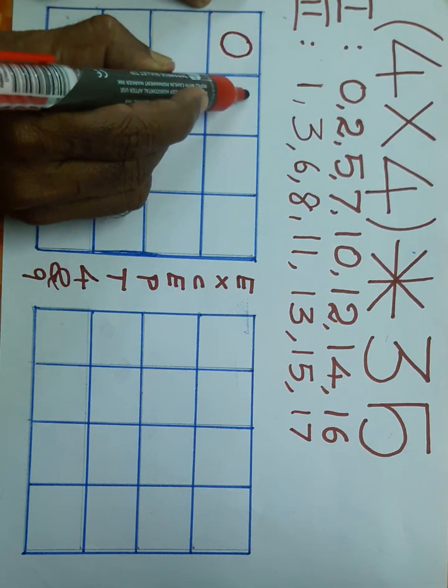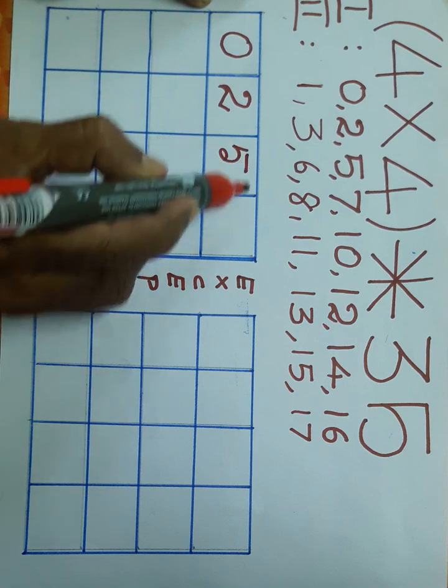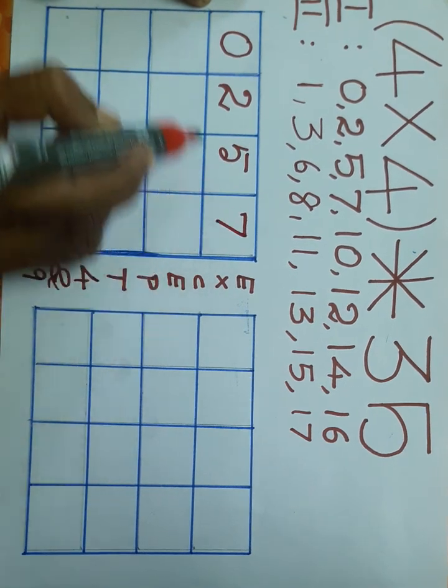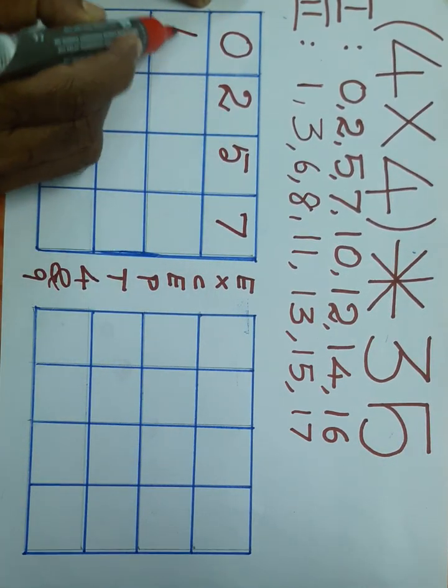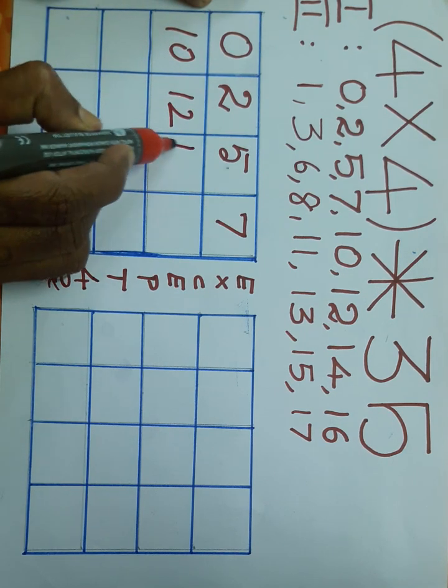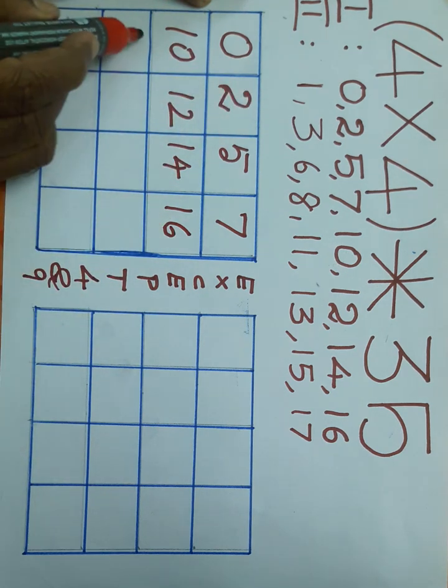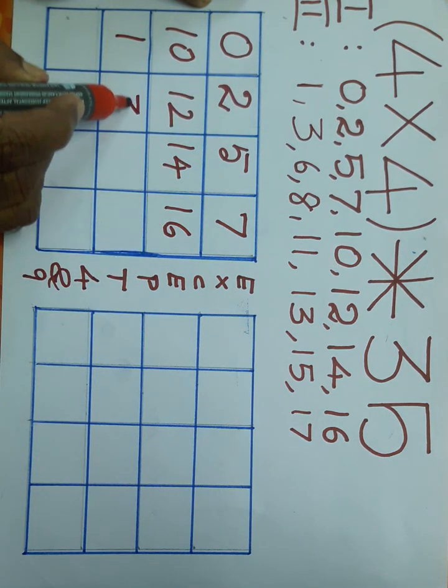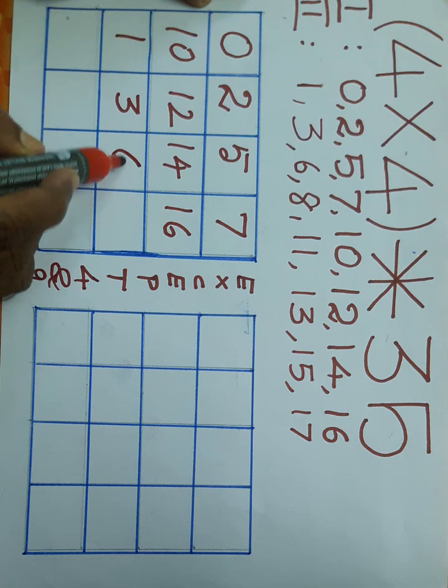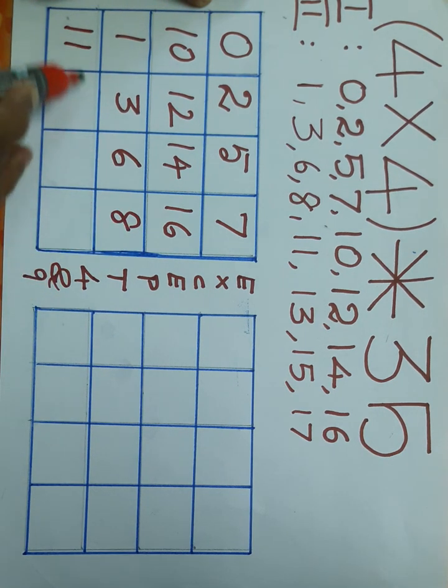0, 2, 5, 7, 10, 12, 14, 16, then 1, 3, 6, 8, 11.